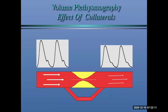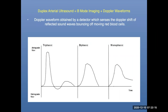Think of PVRs as physiologic flow — giving you blood volume, a qualitative assessment of what's going on in the limb. Duplex arterial ultrasound — B-mode imaging plus Doppler waveforms — gives you a much more quantitative assessment of where the abnormality is, and with a good ultrasound tech or team, you're getting structural information about the location and level of the problem.